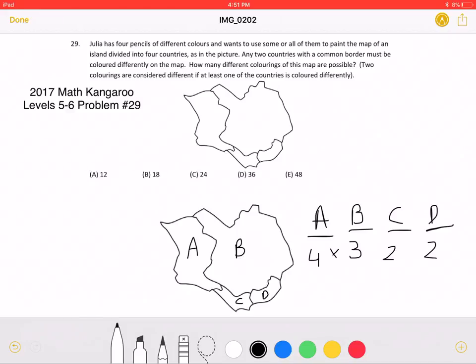Now, we must multiply these numbers to get the total possible amount of different colors. And if we multiply four times three times two times two, we will get 48, which is answer choice E.